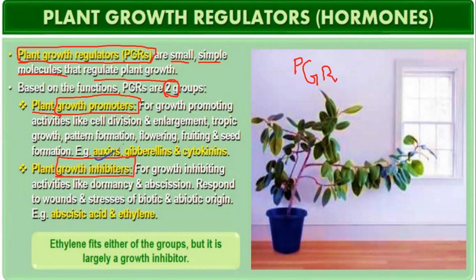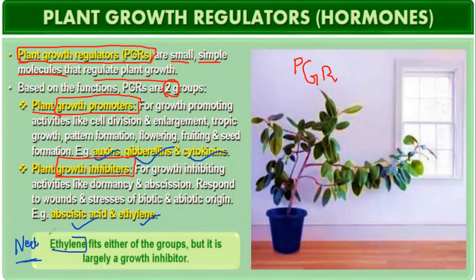Auxins, gibberellins, and cytokinins come under growth promoters. Abscisic acid and ethylene come under growth inhibitors. An important note for NEET: ethylene fits either group — it is largely a growth inhibitor, but it can also act as a growth promoter, for example in the ripening of fruit.